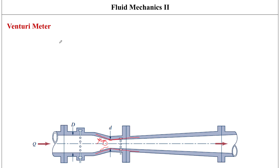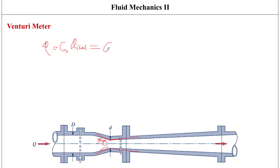The flow rate for the venturi meter is given in terms of the ideal flow rate multiplied by a coefficient called the venturi discharge coefficient, C subscript V. This gives us Q = C_V multiplied by the throat area A_T, where A_T = πd²/4, just as we did previously.